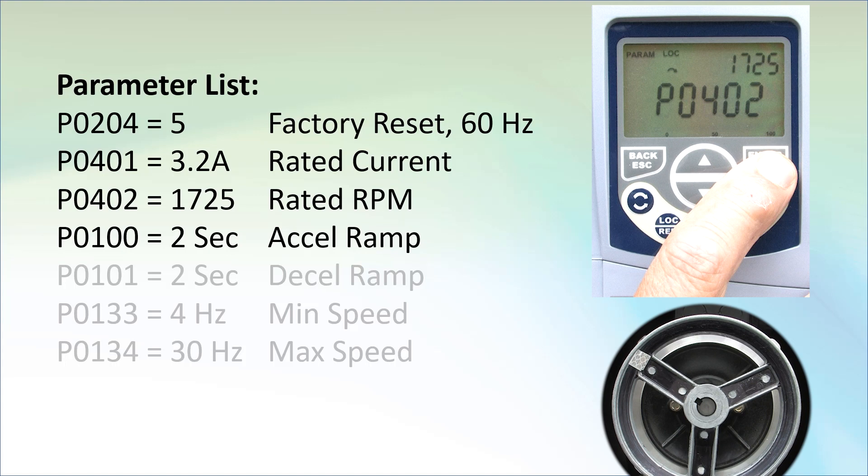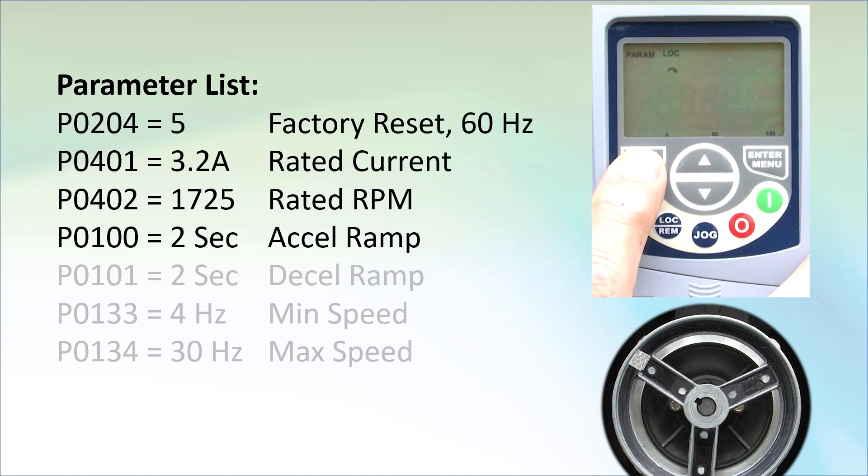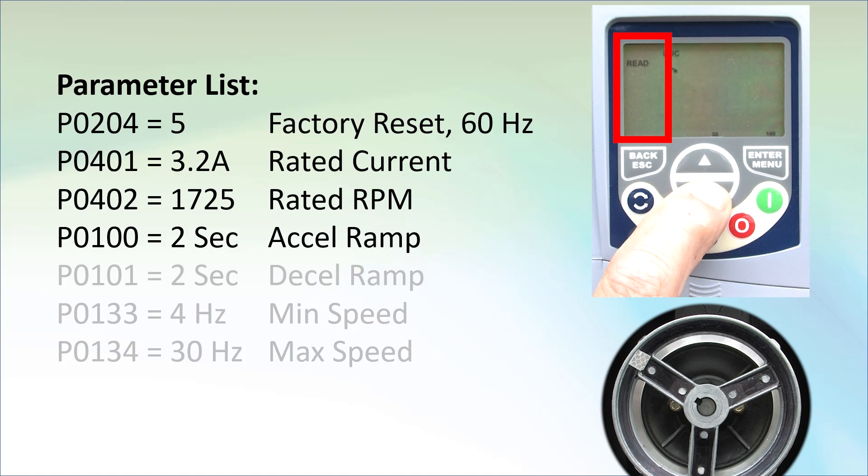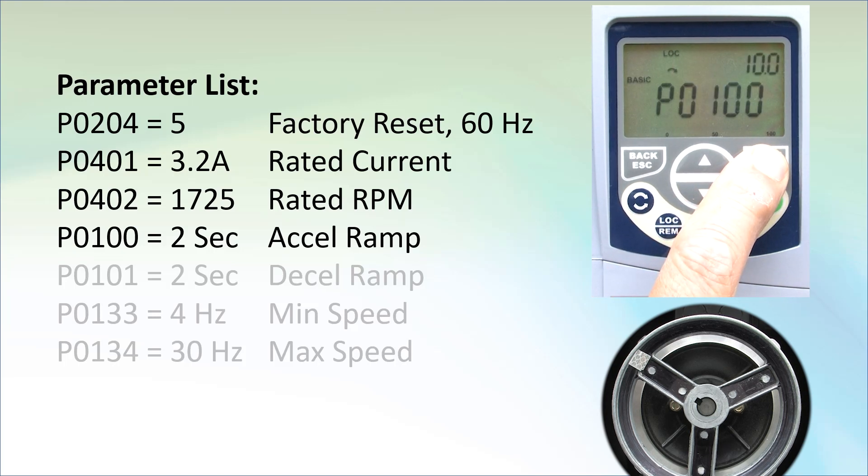Acceleration is parameter 100 and I know that's in the basic parameter group so I'll hit escape to back up to the menu level, arrow to the basic group and look at that. It dropped us right at the acceleration parameter. That's so much quicker than scrolling.